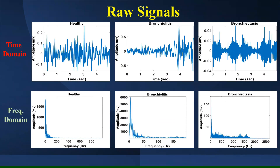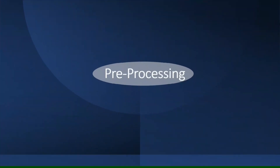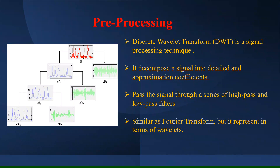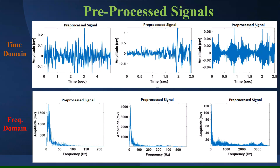Pre-processing. In the pre-processing stage, we used the Discrete Wavelet Transform (DWT), which is a signal processing technique, applying its first approximation coefficient. The DWT takes the audio signal as input and decomposes it into detailed and approximation coefficients: detailed coefficients contain higher frequency information, while approximation coefficients contain lower frequency information. The DWT decomposes the signal using a series of high-pass and low-pass filters, similar to Fourier transform but representing signals in terms of wavelets rather than sinusoids.